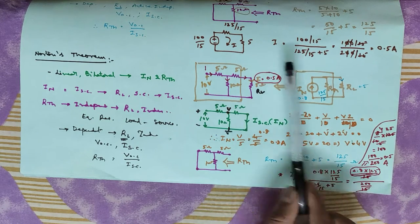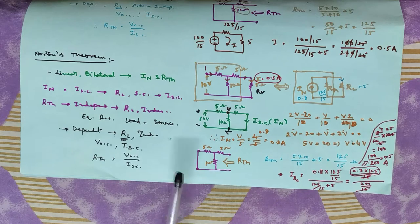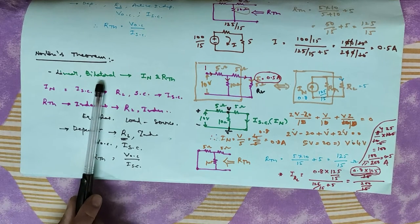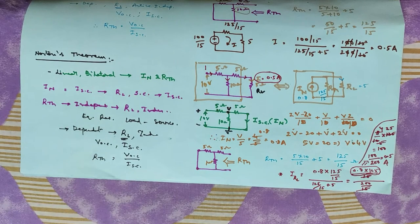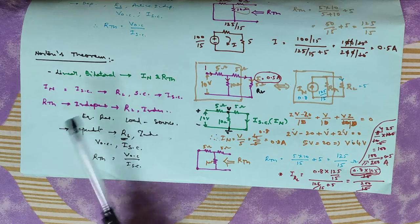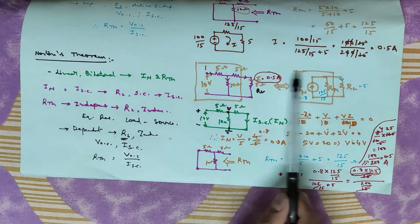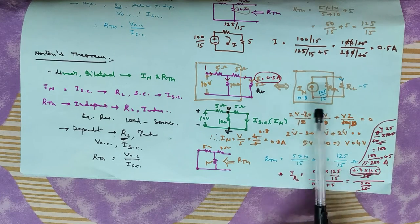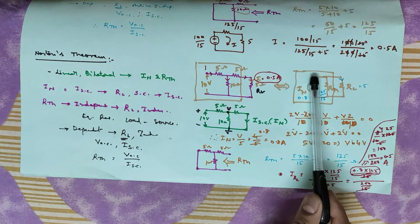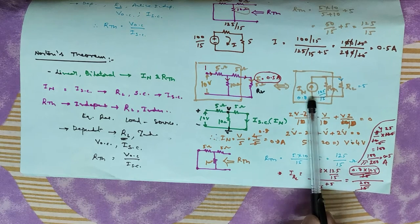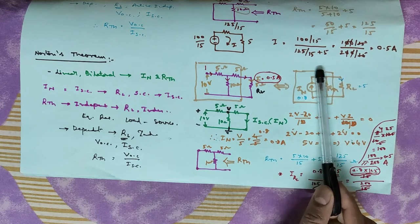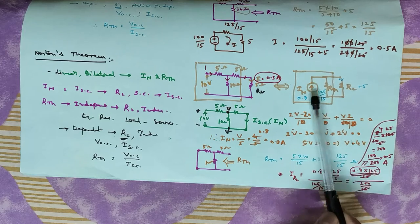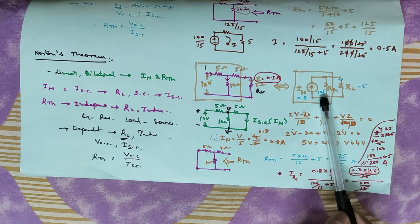In this circuit — a linear bilateral network — we have already explained this circuit. We need to change the representation: the voltage source is in series with the resistance, and the current source is in parallel with the resistance.